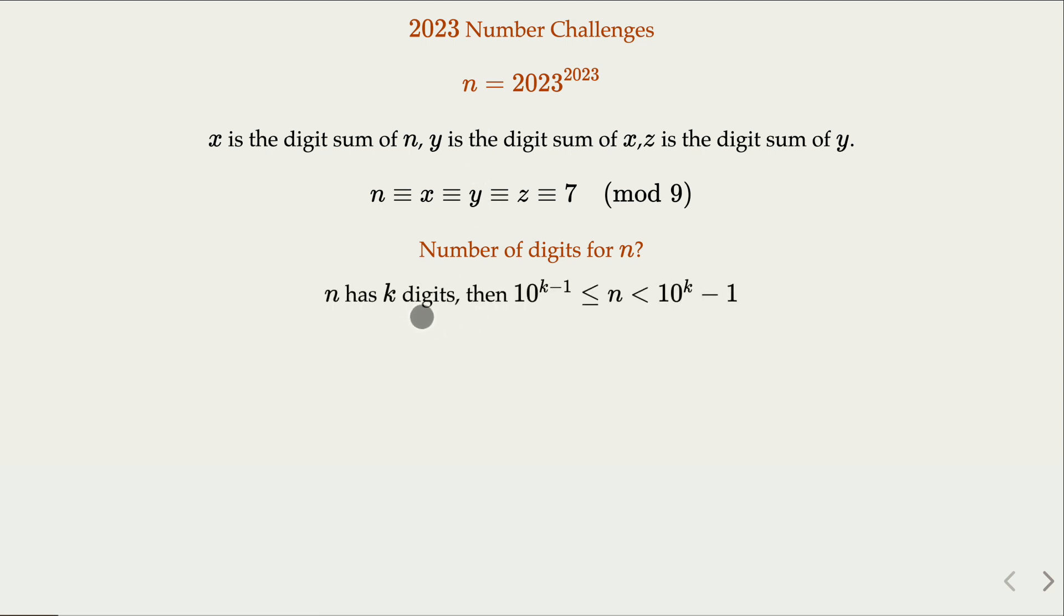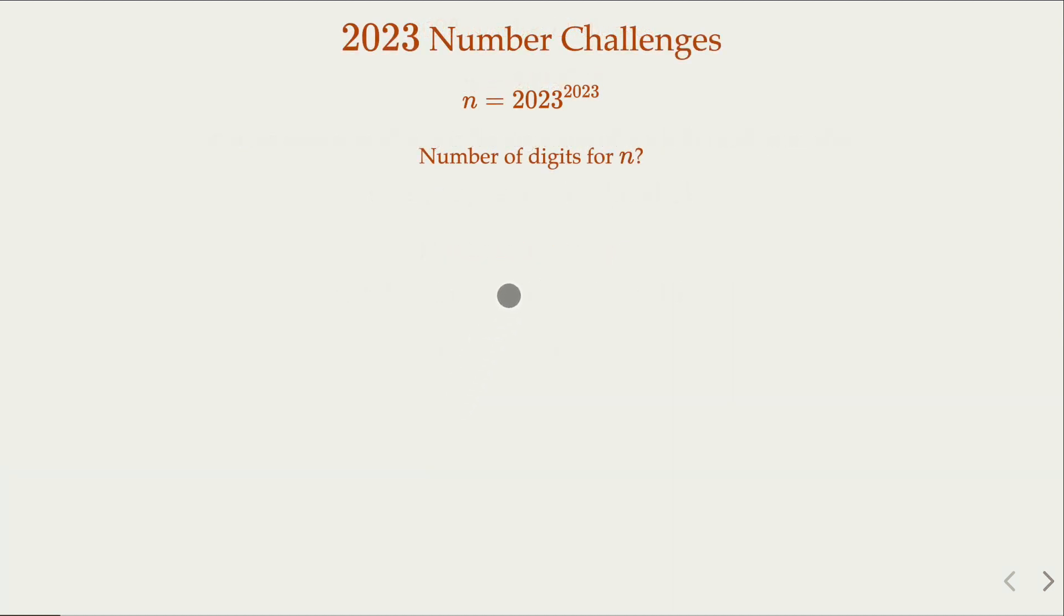In terms of the k digits, the value versus k digits relate to this relation here. So n is in between these two numbers, and you take logarithm base 10. What you get is that the number of digits is about the integer part of log base 10 of n plus 1. For example, in our case, we try to evaluate what is log base 10 of this number. By the property of logarithm, that's 2023 times log of 2023.